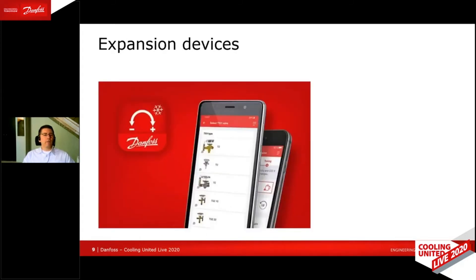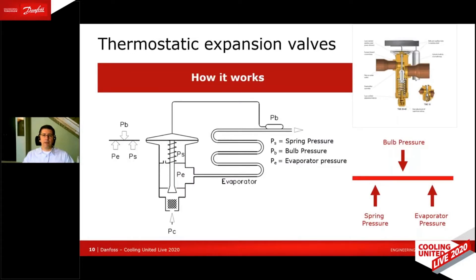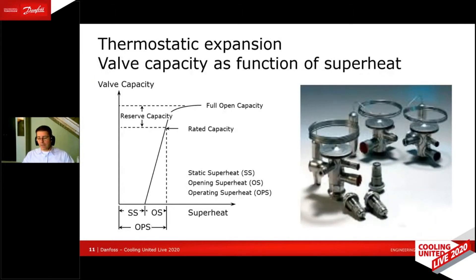How to control the injection of refrigerant into the evaporator? With an expansion device — for example, a thermostatic expansion valve. You have that expansion valve, and on the upper side you have the pressure coming from that sensor bulb pressing downwards. From the lower side, you have evaporating pressure and the spring pressure from the superheat setting. When the bulb gets warmer, you get more pressure on the upper side — it presses down and opens the valve. So more superheat gives more valve opening. That principle leads to a linear curve: the more superheat you get, the more the valve opens until it reaches maximum opening or rated capacity, with a little reserve capacity before it can no longer open anymore.